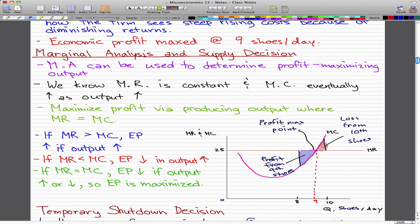If marginal revenue on the other hand is less than marginal cost, then economic profit decreases if output increases. At this point, this is the point where economic profit is maximized.